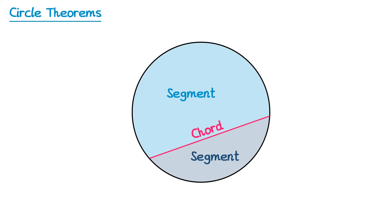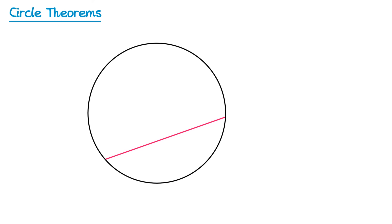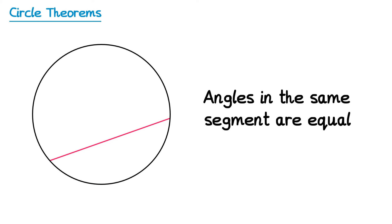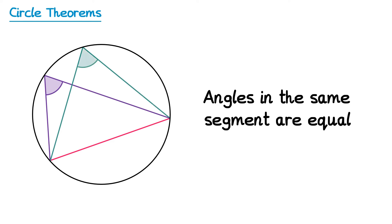Now let's have a look at our first circle theorem. The first theorem states that the angles in the same segment are equal. This means if we use this chord that we've drawn to create an angle but keep that angle within the same segment, all of those angles will be the same size. So let's draw an angle in the upper segment using this chord.